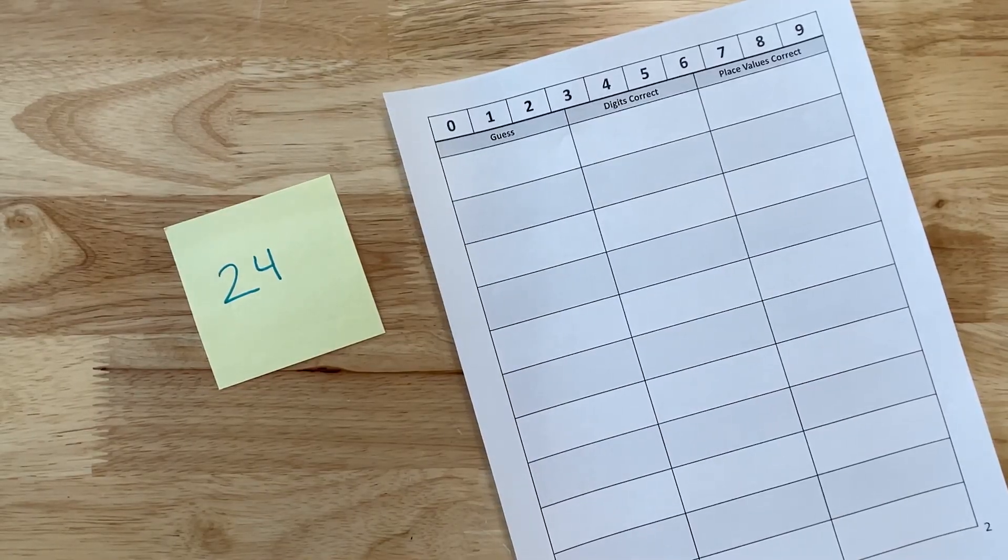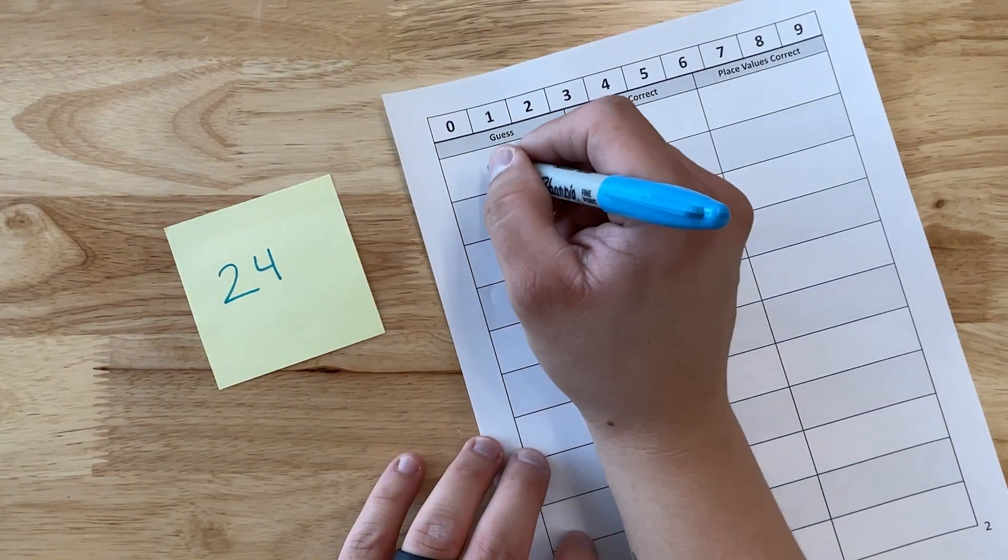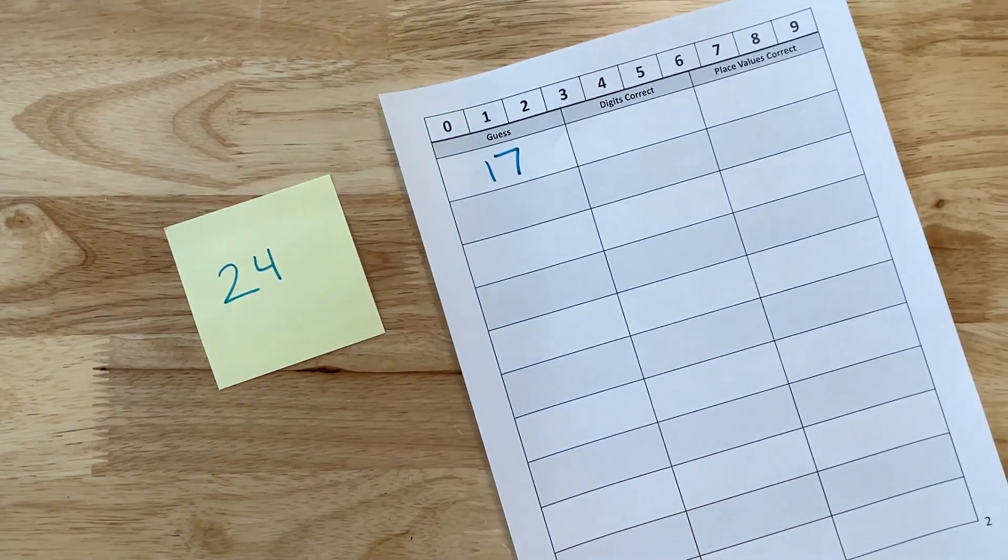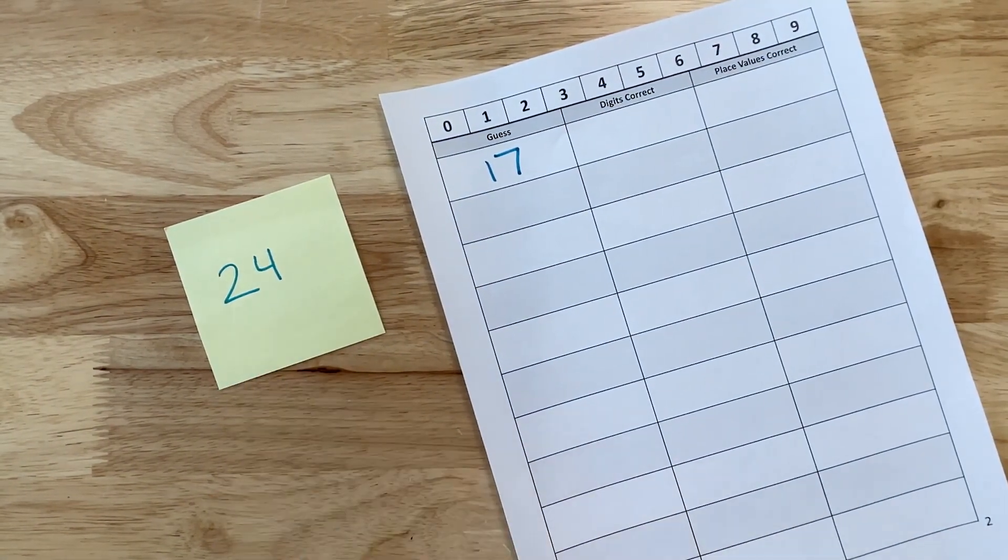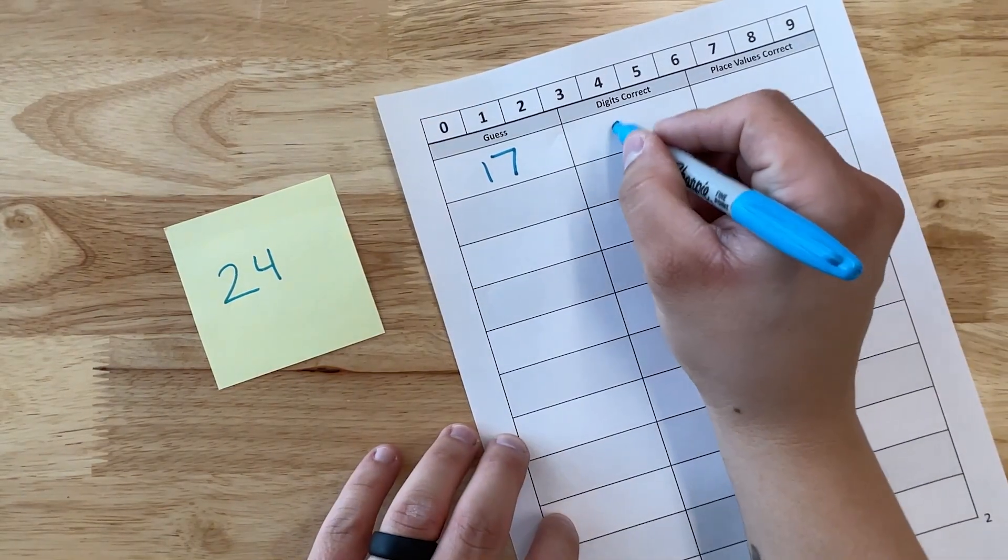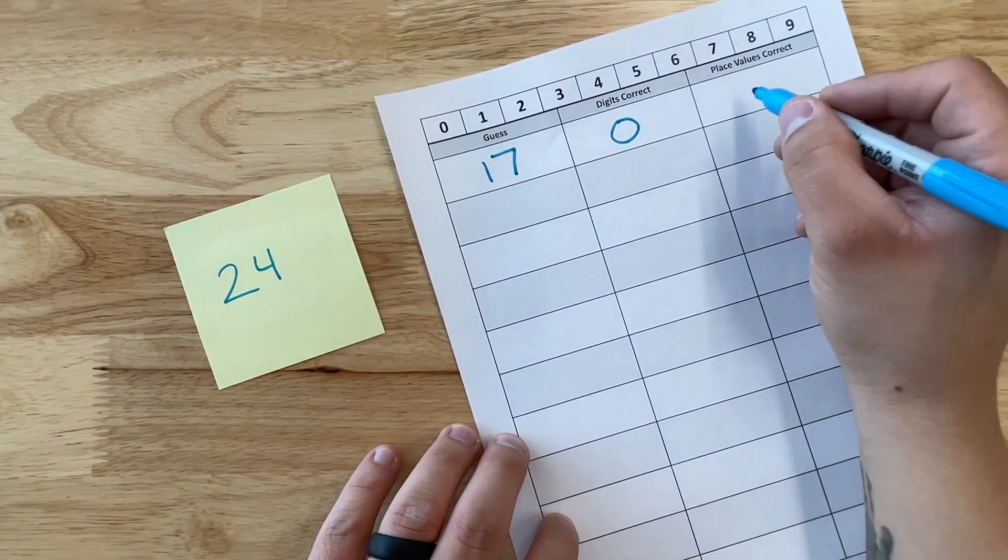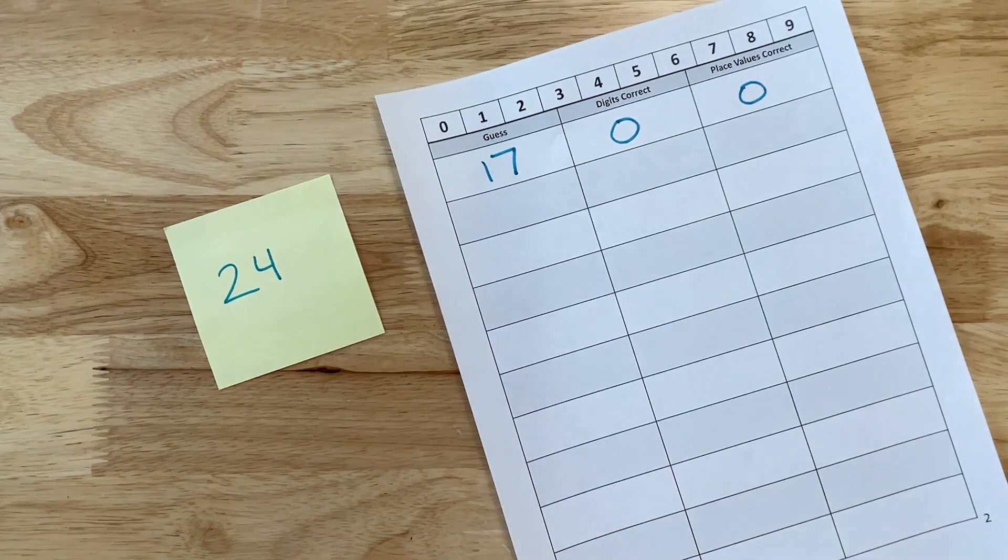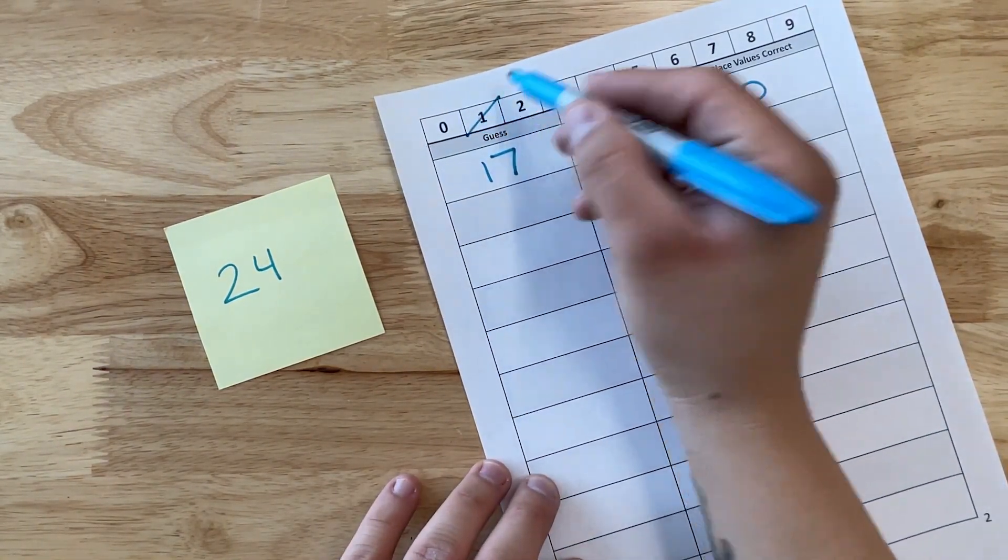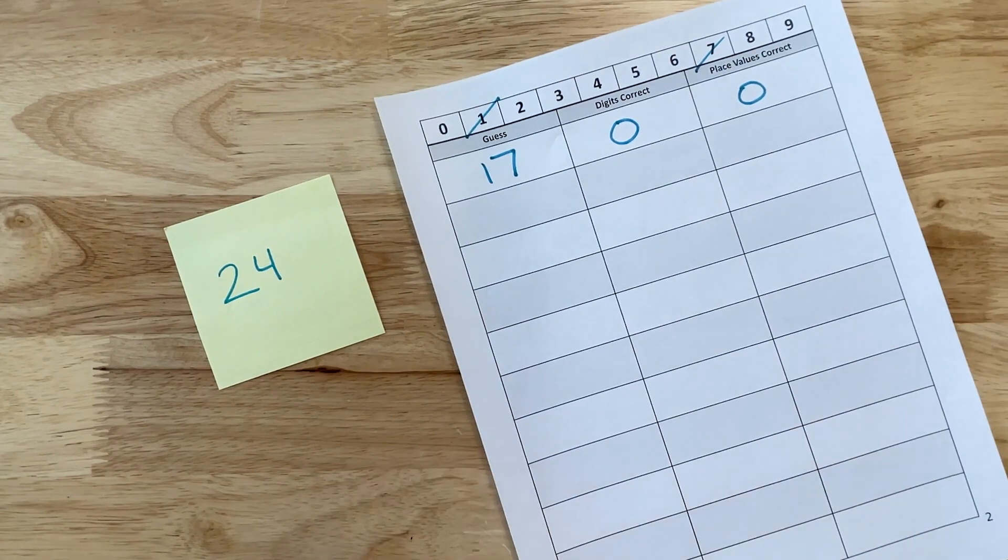We're going to simulate. If a student says 17, well, I know my numbers are two and four, so I'm going to tell them zero digits are correct, zero are in the correct place value. With that being said, we can tell students to cross out one and seven.